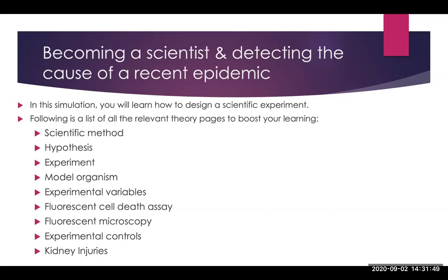In this simulation you will learn what the scientific method is and how to apply it, what is a hypothesis, what is an experiment, what's a model organism, experimental variables — what's a control variable, what's a negative control variable, what's an independent and dependent variable. Then we're going to talk about fluorescent microscopy, fluorescent cell death assay, and kidney disease.